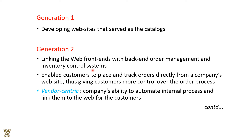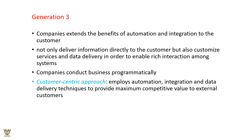In generation two, customers can place and track orders directly. Once payment is made, the customer can see the shipment number, package number, vehicle number, which warehouse, which facility, and where it is moving from. This represents vendor-centric companies automating internal processes and linking them to the web for customers.